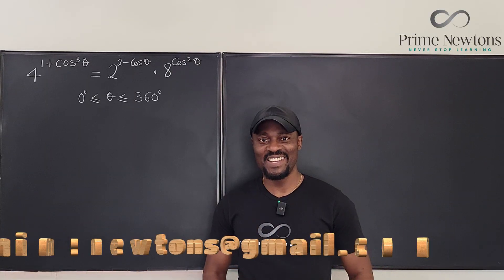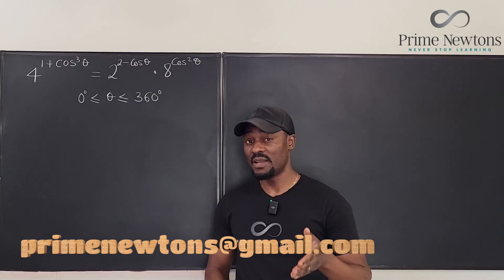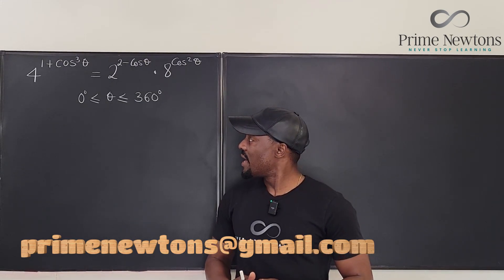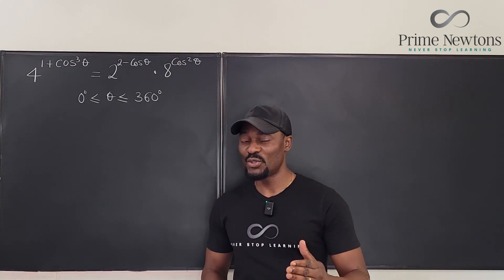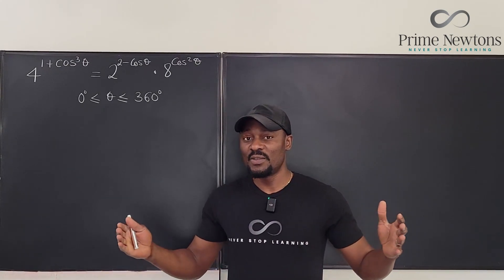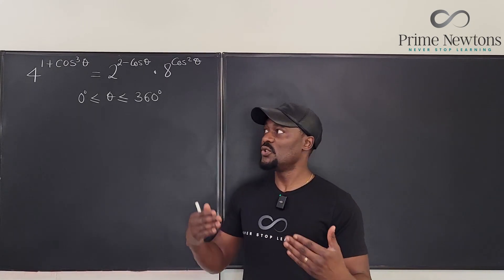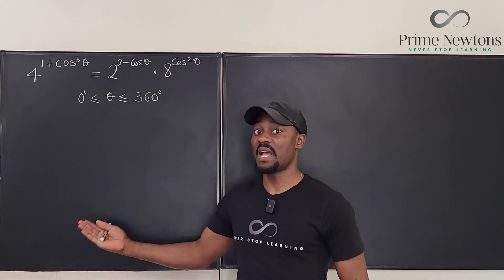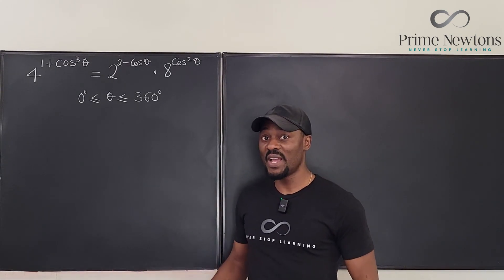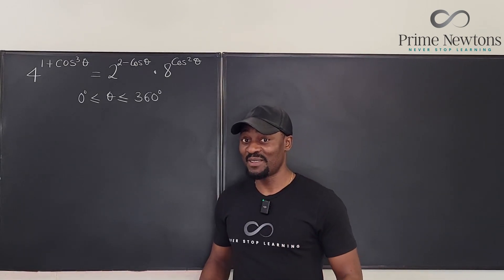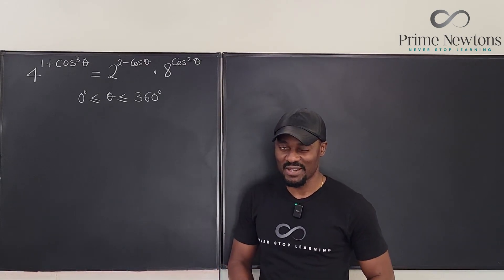Welcome to another video. This is a problem from the Canadian Euclid math contest — an exponential trig equation, so everything falls within algebra. If you are a 12th grader, you are expected to be able to answer this. It was sent in by Dan the man; it was the first part of a question I had previously solved. Let's get into the video.